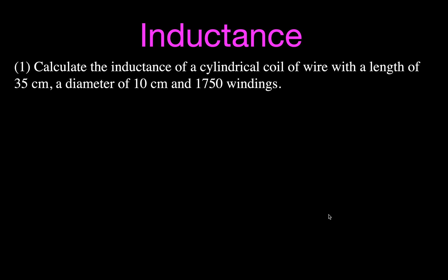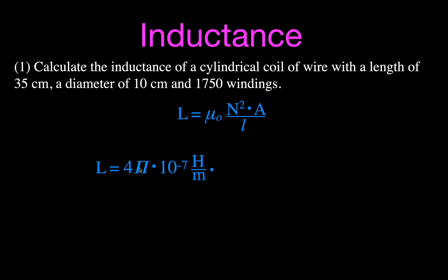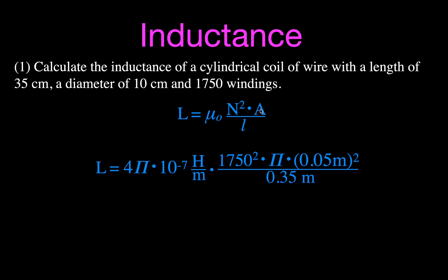Example one: calculate the inductance of a cylindrical coil with a length of 35 centimeters, a diameter of 10 centimeters, and 1,750 windings. Using the inductance equation L equals mu-naught times N squared times A divided by length: mu-naught is 4 pi times 10 to the minus 7 Henry per meter, N is 1,750 squared, the cross-sectional area is pi R squared with radius 5 centimeters, divided by 35 centimeters converted to meters. The result is L equals 0.0864 Henrys, or 86 milli-Henrys.